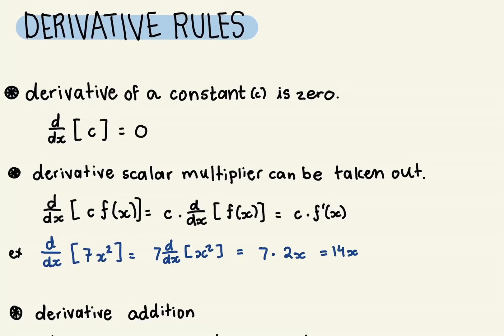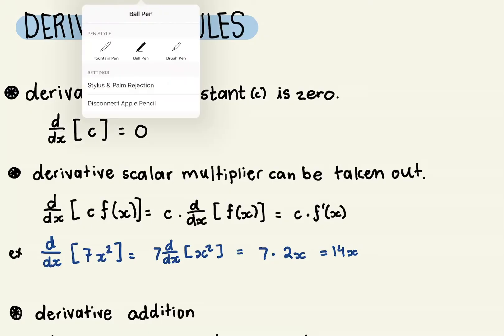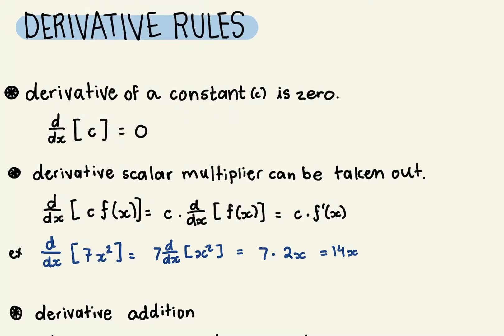So first, the first rule is that the derivative of a constant is zero. Right over here, we have the notation that shows that the derivative of C, which is any given constant, will be zero.